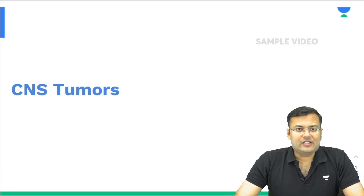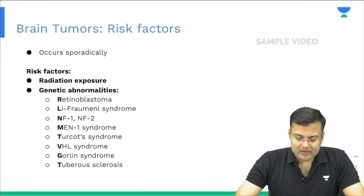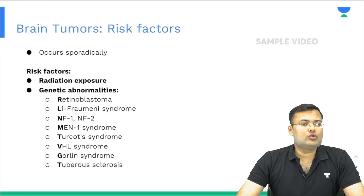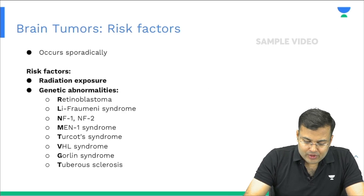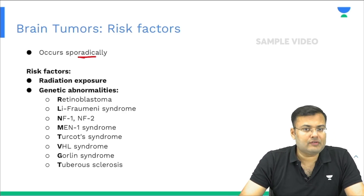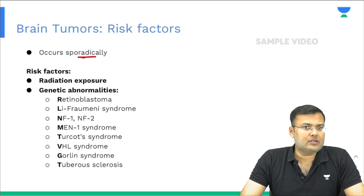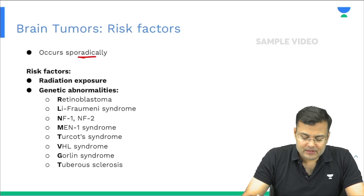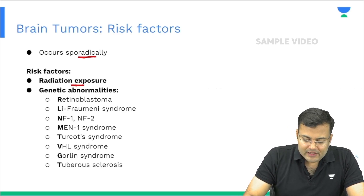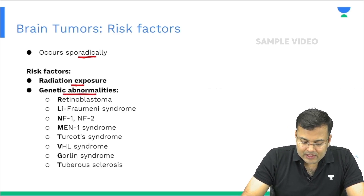Now we are going to start CNS tumors. Most of the brain tumors occur sporadically. The risk factors for brain tumors are: first, radiation exposure, and there are certain genetic abnormalities which are associated with increased risk of brain tumor.